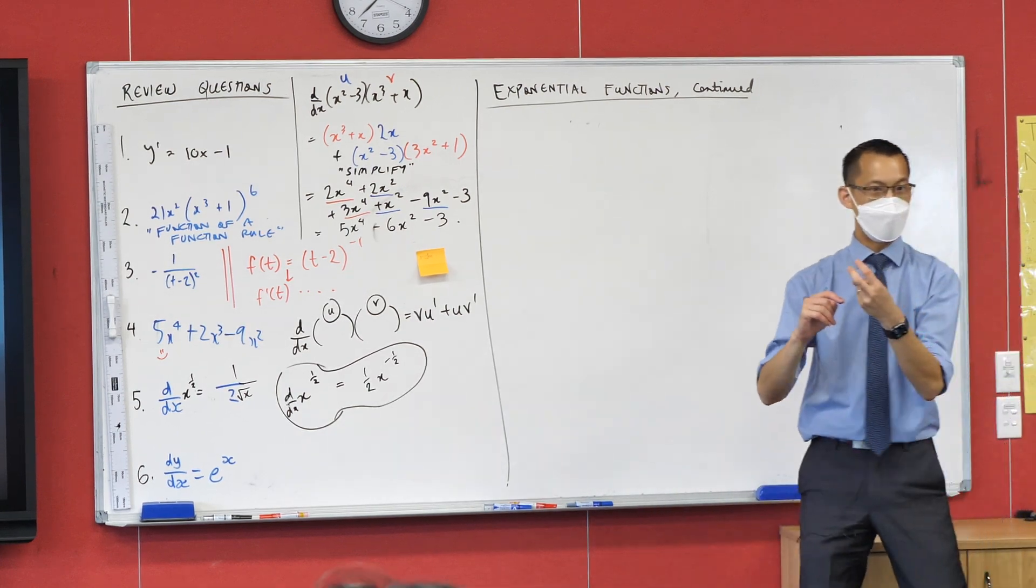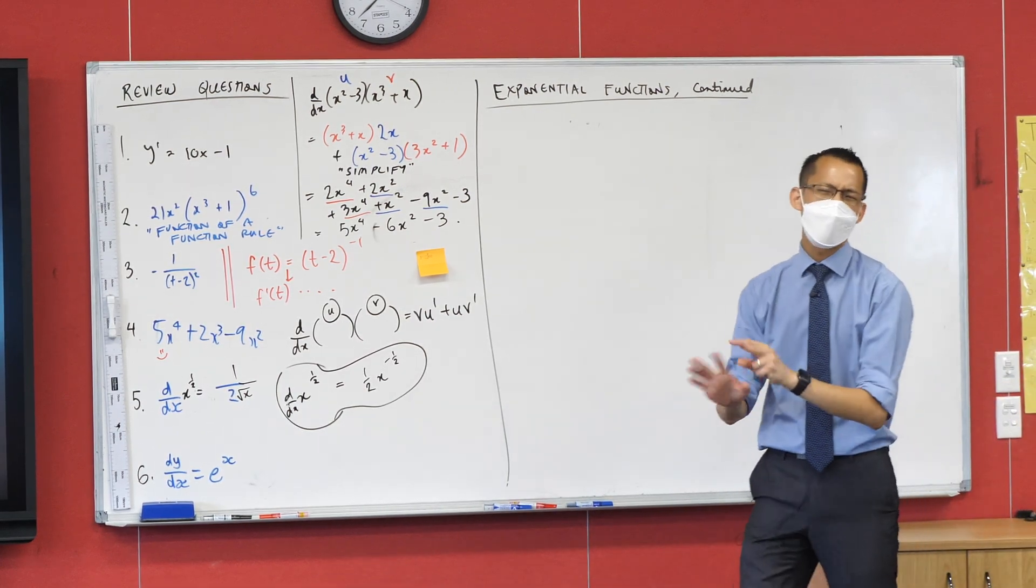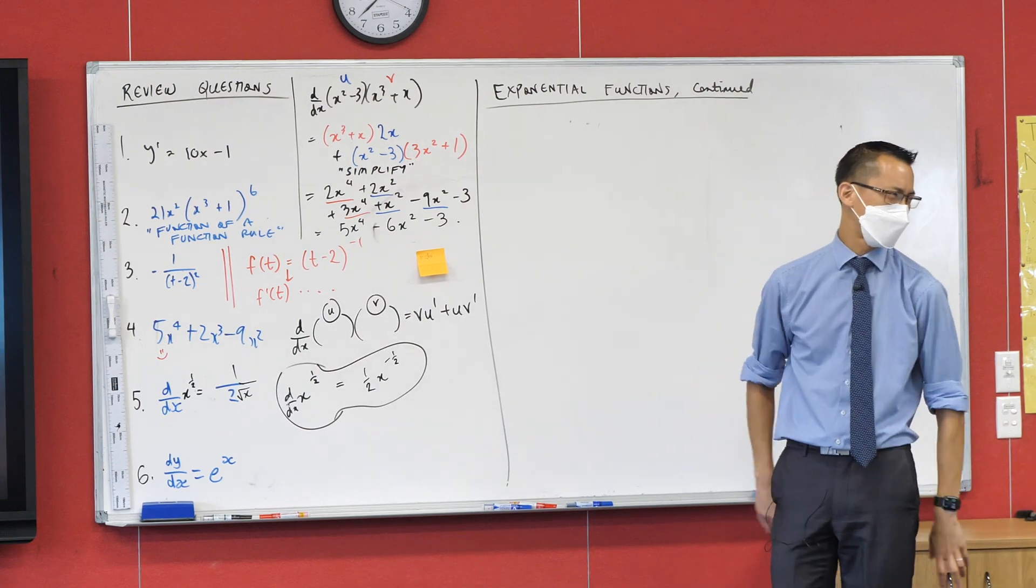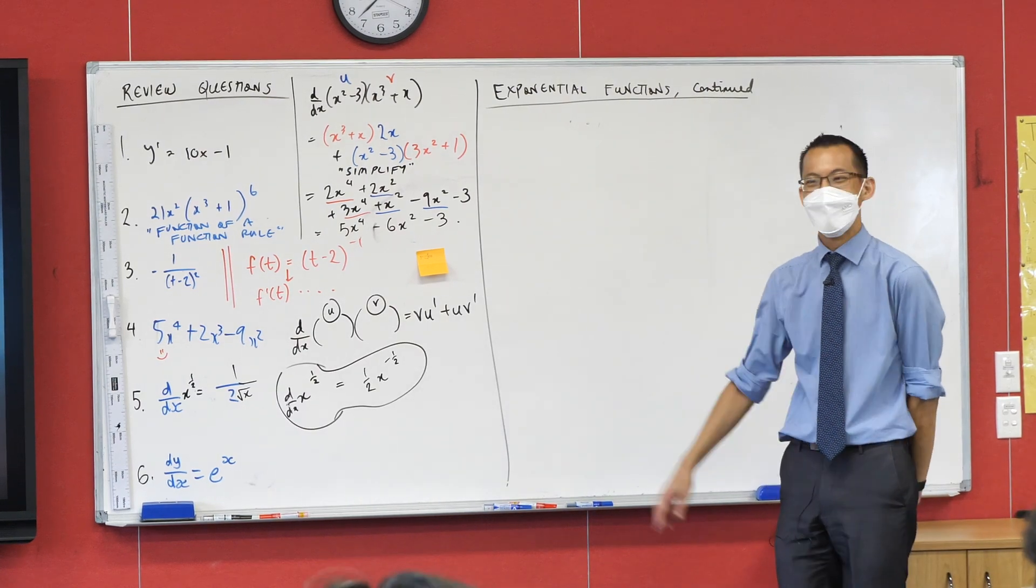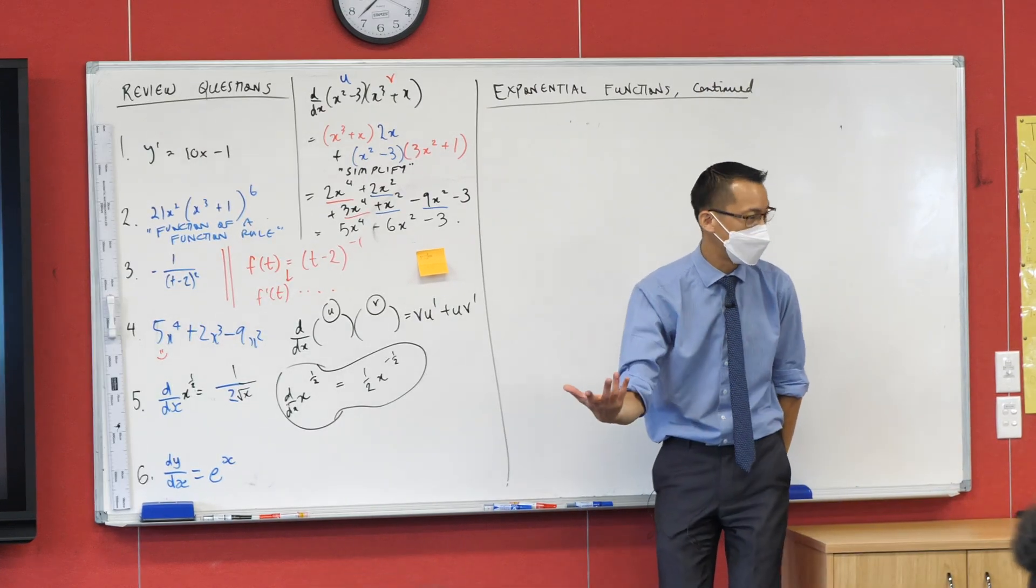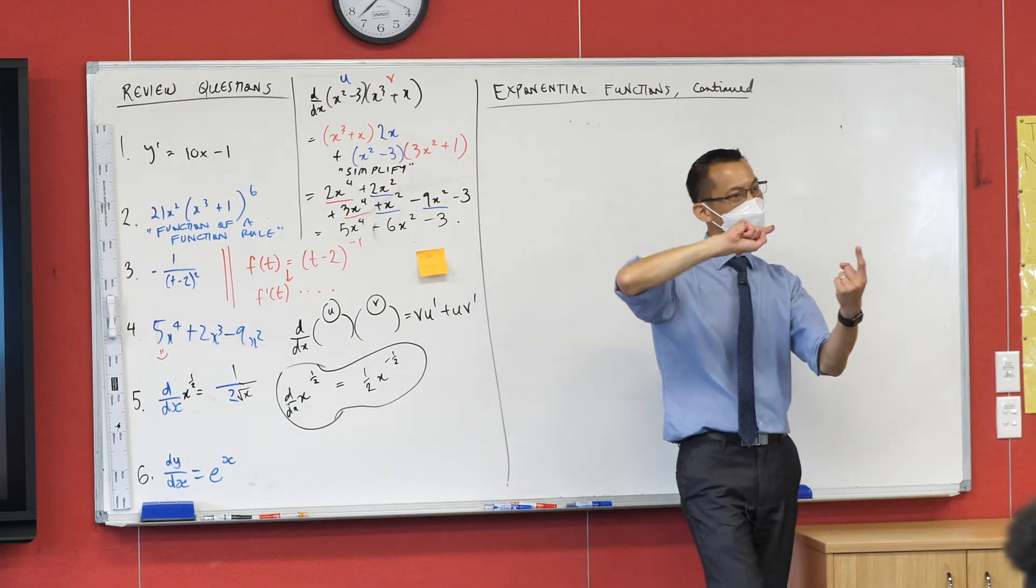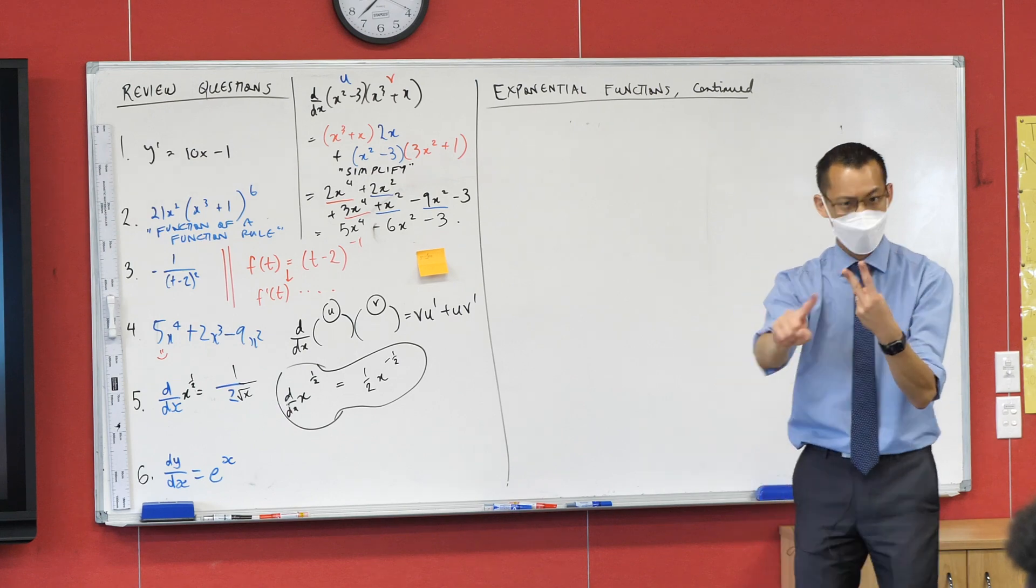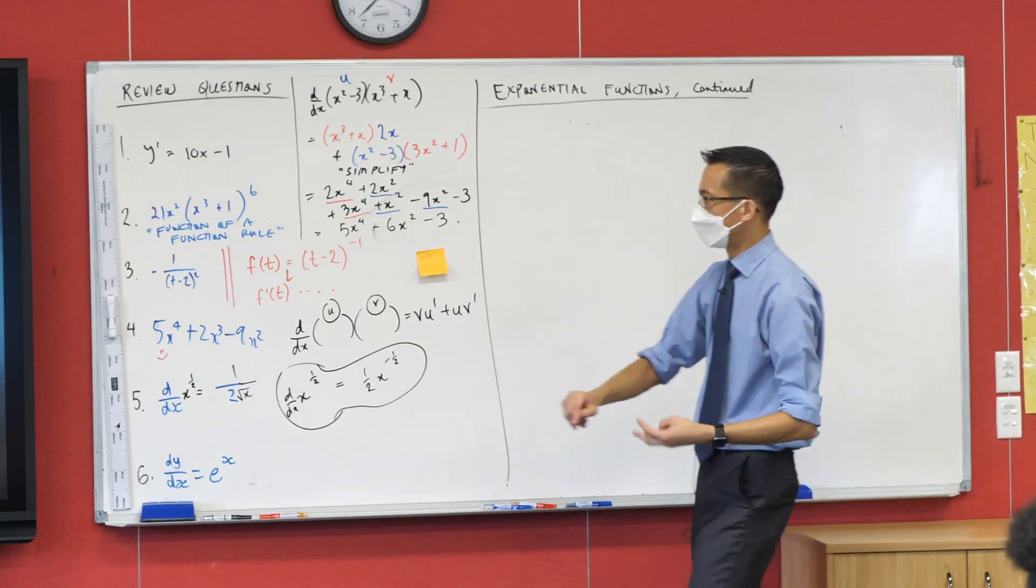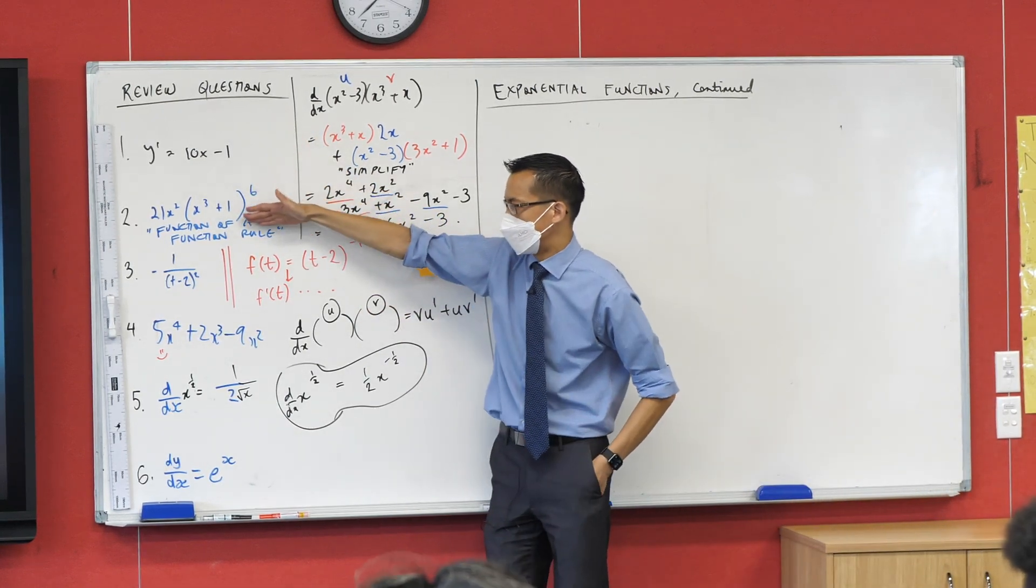We looked at product rule. I didn't make you do quotient rule because quotient rule is just a bit gross to be honest, but you know it, right? You've encountered this before. However, just having a look at the questions you've used chain rule, product rule, and quotient rule all on the same kinds of functions.